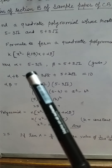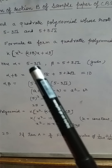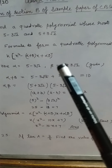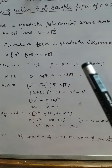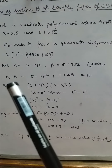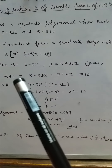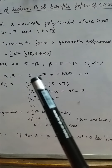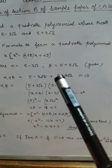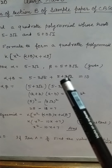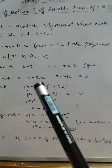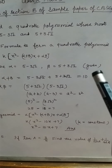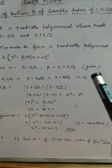Here alpha is given as one root: 5 minus 3 root 2, and beta is given as 5 plus 3 root 2. First we will find the sum of the roots: alpha plus beta equals 5 minus 3 root 2 plus 5 plus 3 root 2. The minus 3 root 2 and plus 3 root 2 cancel, so the answer is 10.